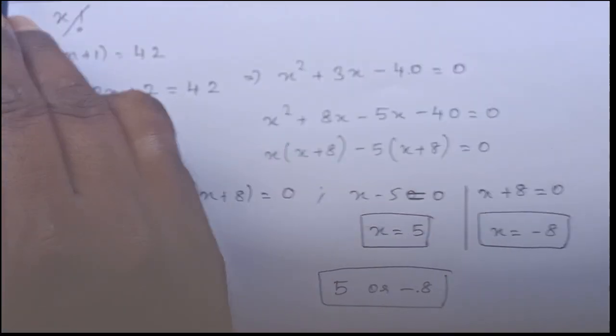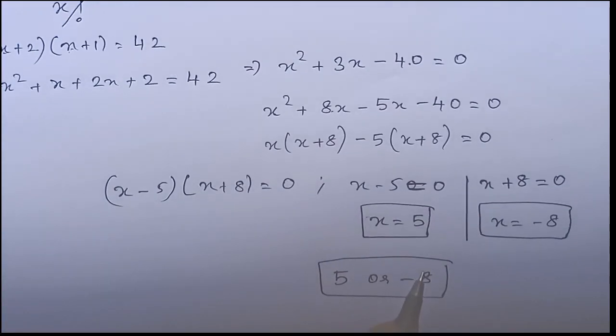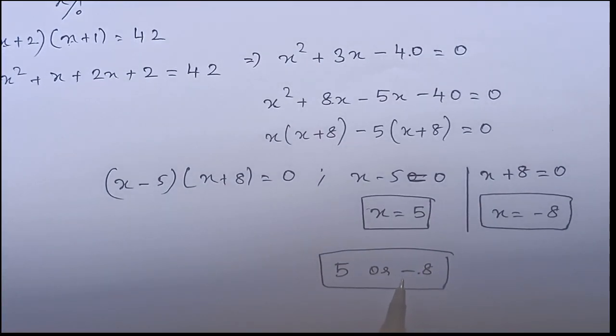But x is minus 8 factorial will not come. So negative values we cannot put. So final answer is 5.